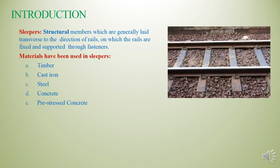Introduction. As the figure suggests, the slippers are the structural members which are generally laid transverse to the direction of rails, on which rails are fixed and supported through fasteners. The materials that have been used in slippers are Timber, Cast Iron, Steel, Concrete, and Pre-Stress Concrete.